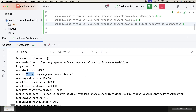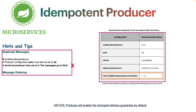We can confirm the configuration has been set. max.in.flight.requests.per.connection set to 1 means that messages are sent and acknowledged one at a time, guaranteeing message order even when retries happen. This ensures messages are processed in the exact order they were sent. Keep in mind this may slightly reduce throughput, but for critical businesses like banking and payments, guaranteeing order is essential.